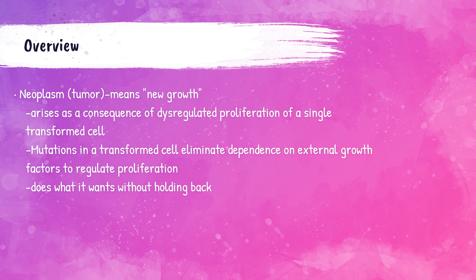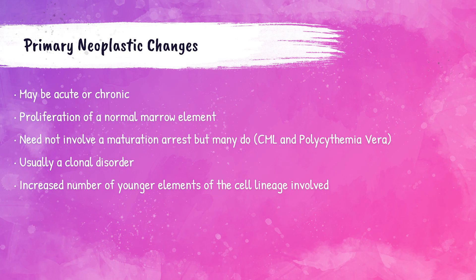Neoplasm, or tumor, means new growth. These neoplasms arise due to a dysregulated proliferation of a single transformed cell. These mutations cause that transformed cell to eliminate its dependence on external growth factors to regulate its proliferation. In simple terms, this means that the cell just does whatever it wants — it just grows and grows independently of other factors.